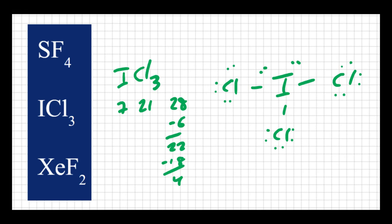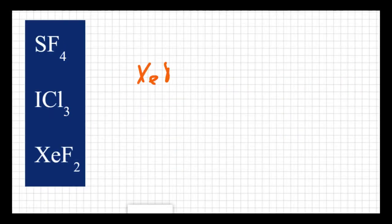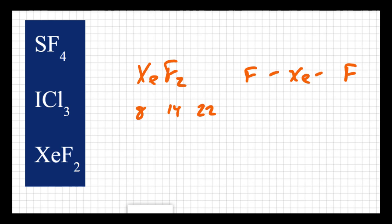For XeF2, xenon has eight valence electrons and each fluorine has seven, so 14 from fluorines gives us 22 electrons total. With xenon in the middle and two fluorines bonded to it, I used four electrons, leaving 18. Putting six on each fluorine uses 12, leaving six electrons. I'll put all six on the xenon, because xenon is the only atom that can expand its octet here — fluorine cannot. So again, we have five sites on the central atom, this time with three lone pairs.